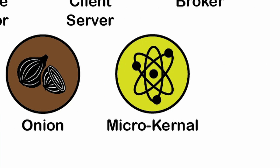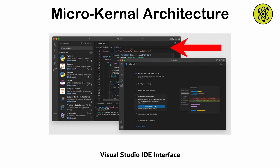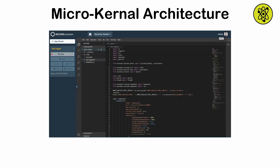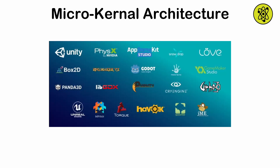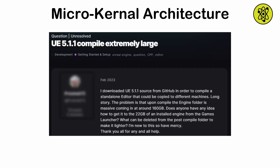Microkernel architecture. This pattern provides a minimal core system that can be extended with plugins. The core handles only essential operations, while additional features are implemented as extensions. Common examples include operating systems, IDEs, and game engines, where external libraries and packages can be installed to extend base functionality. Care should be taken when managing plugins and to avoid bloating the core.